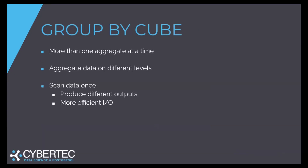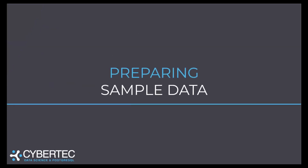The Group by Cube statement's core idea is to run more than one aggregation at once. The reason we want to do that is basically to read data once and use it multiple times. If you have to run many Group by statements, you have to read data more often, and that's exactly what we want to avoid. Reading data is usually fairly expensive on a big system, and we want to make as much use out of it as possible. That's exactly the purpose of Cube. Let's prepare some sample data and see what Cube can do for us in real life.